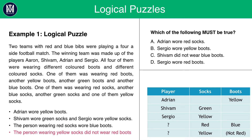Now let's look at each of the answer options. Option A: Adrian wore red socks. No — this can't be true because the person wearing red socks wore blue boots, and Adrian wore yellow boots, so we can rule out A. Option B: Sergio wore yellow boots. No — Adrian wore yellow boots, so this is false. Option C: Shivam did not wear blue boots. This is definitely correct, because the person wearing red socks wore blue boots, and Shivam wore green socks — so he cannot be wearing blue boots. C is therefore the correct answer. Option D: Sergio wore red boots — this is wrong because the person wearing yellow socks did not wear red boots, and Sergio wore yellow socks.